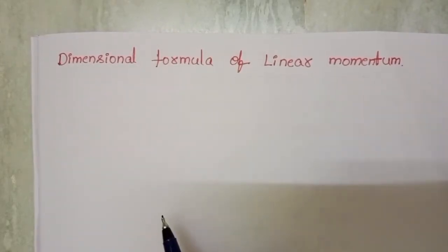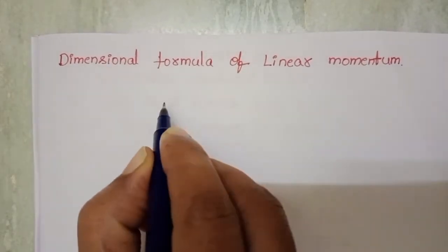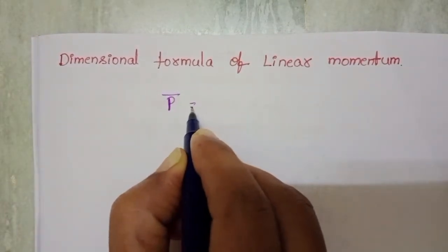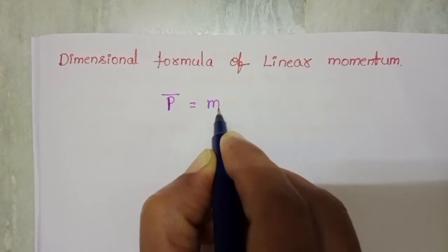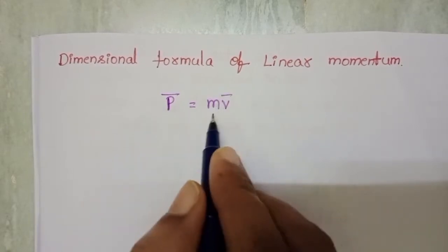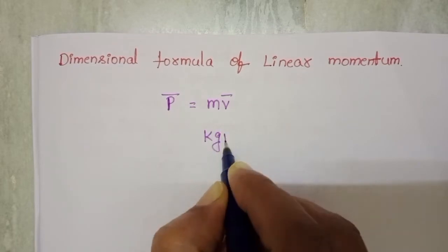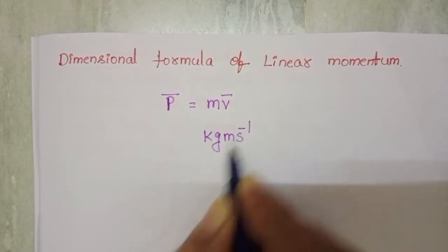Dimensional formula of linear momentum. Linear momentum is denoted with P̄, and the formula is the product of mass and velocity: P̄ = m·v̄. The SI unit of linear momentum is kg·m/s.